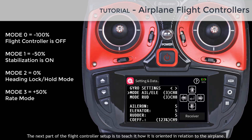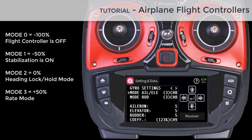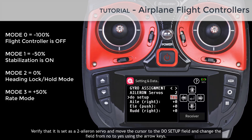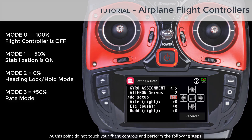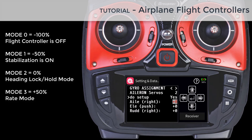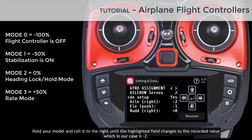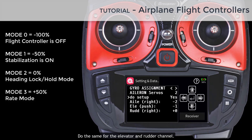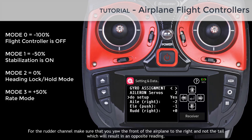The next part of the flight controller setup is to teach it how it is oriented in relation to the airplane. Take notice of the installation recommendations in the manual. Tap on the right arrow key to access the gyro assignment menu. Verify that it is set as the two aileron servo, then move the cursor to the do setup field and change it from no to yes. Do not touch your flight controls, then move the aileron stick to the right to highlight the aileron field. Hold your model and roll it to the right until the highlighted field changes to the recorded value. Do the same for the elevator and rudder channel — for the rudder, yaw the front of the airplane to the right, not the tail.